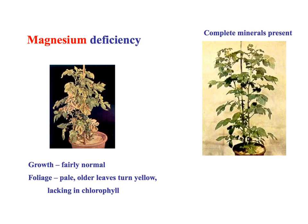Magnesium deficiency. You can see growth is fairly normal - we've got good growth here - but our leaves are pale, older, and turning yellow. That's because they're lacking in chlorophyll. Magnesium is required for chlorophyll production, and we know we need chlorophyll to absorb sunlight for photosynthesis. So what we're getting here is ultimately a diminished level of photosynthesis - if we're lacking in magnesium, we're going to be lacking in chlorophyll.